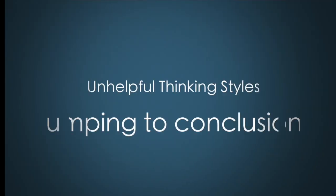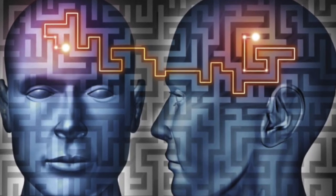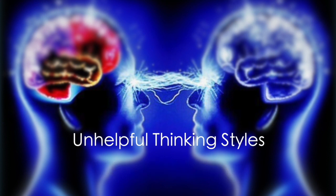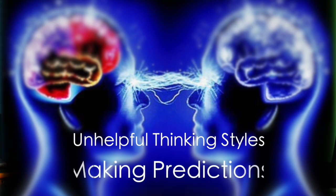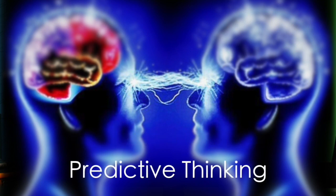Jumping to Conclusions: We jump to conclusions when we assume that we know what someone else is thinking — this is called Mind Reading — and when we make predictions about what is going to happen in the future, this is called Predictive Thinking.